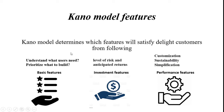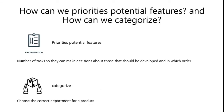Basic features help us understand what users need and prioritize what to build. Investment features are concerned with the level of risk and anticipated returns from the investment. Performance features address how to customize the product for customers, how to create sustainability — meaning product safety from initial to end stage — simplification of the product compared to previous versions available in the market, and how to prioritize potential features. The order in which tasks are followed to develop the product and the step-by-step sequence to produce and ship the product are also part of performance features.